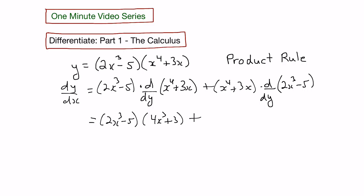plus x to the fourth plus 3x, times the derivative of 2x cubed minus 5, which would be 6x squared.